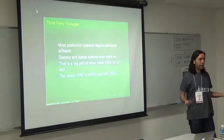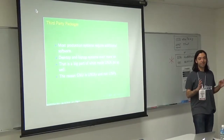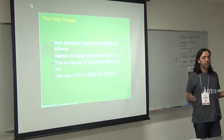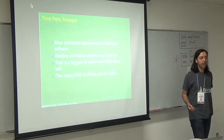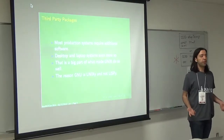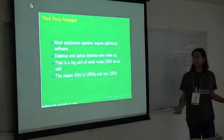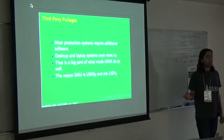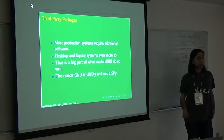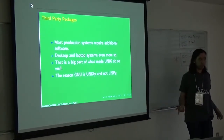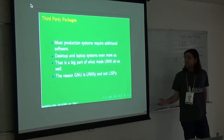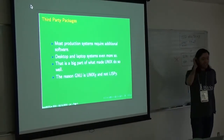If you've got a production system, a server that's doing something, you need more than what's in the base system. It's always the case — maybe some people have managed to get it perfect, but usually you need those four different versions of PHP or Ruby. I personally am working on something that needs two different versions of Node just to make things work. On a desktop or laptop you need your web browser, your text editor, office systems.